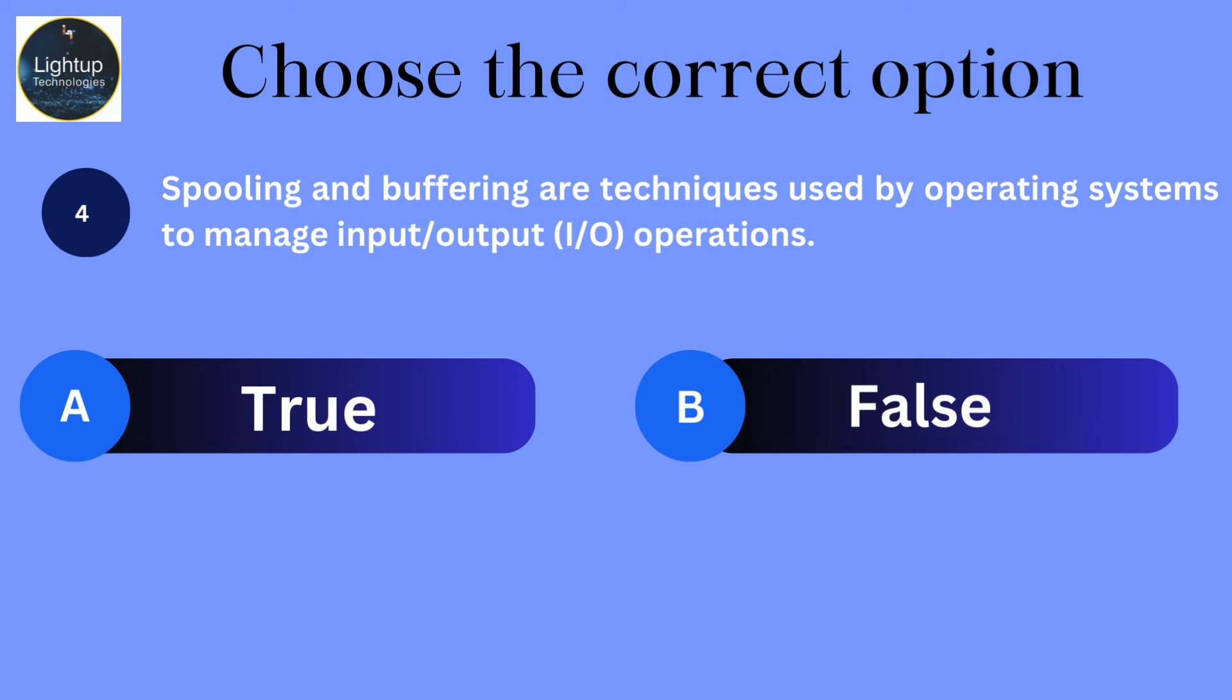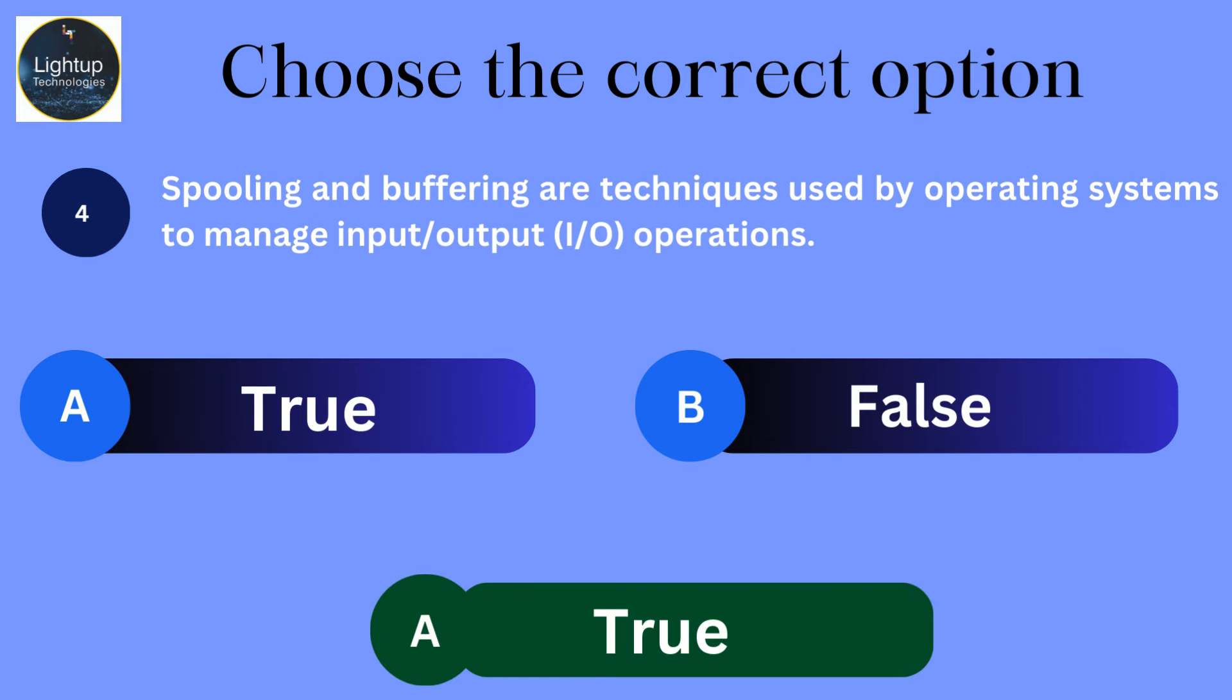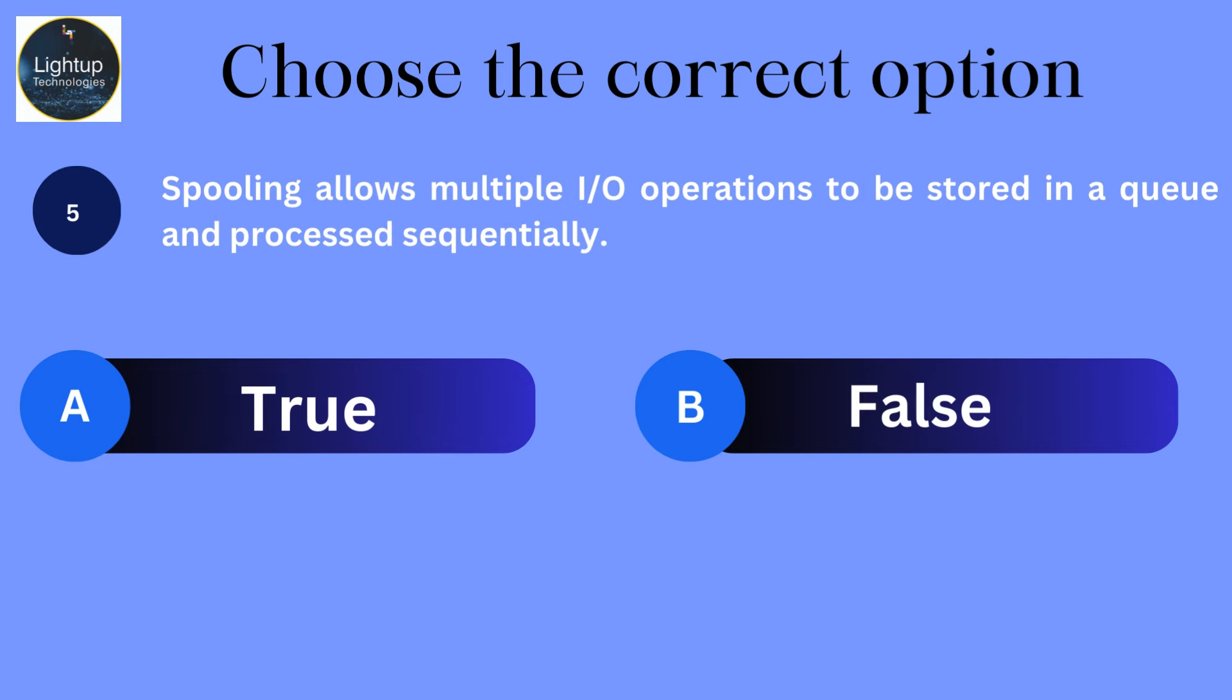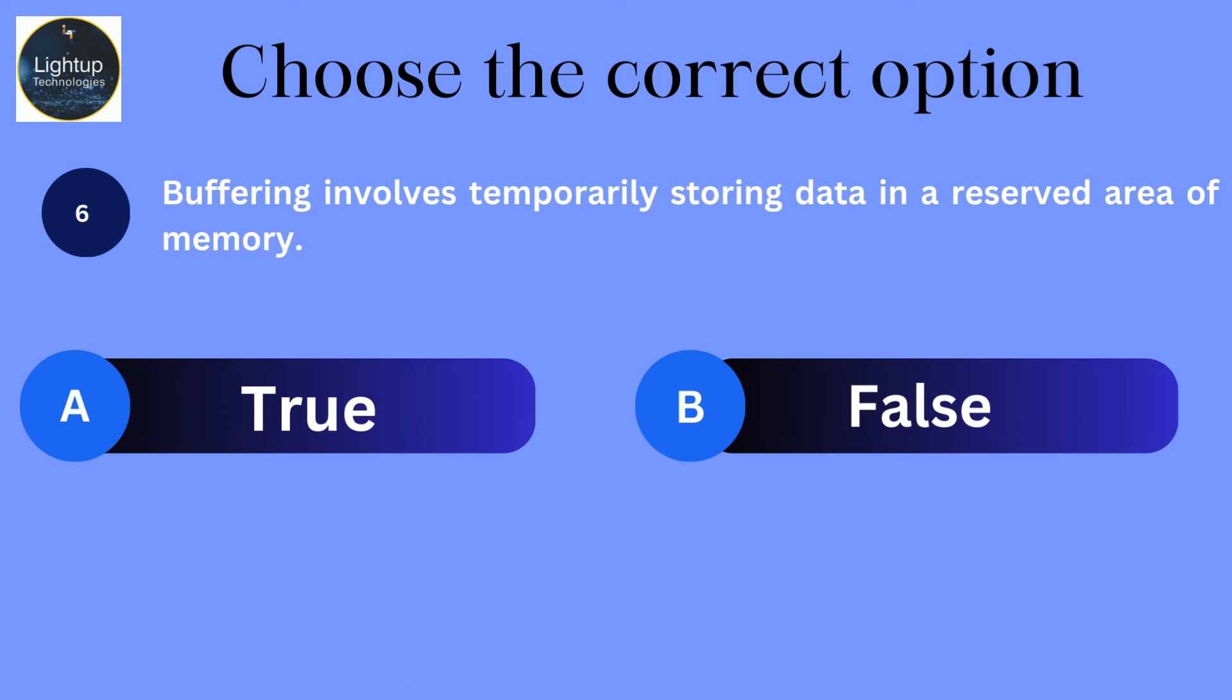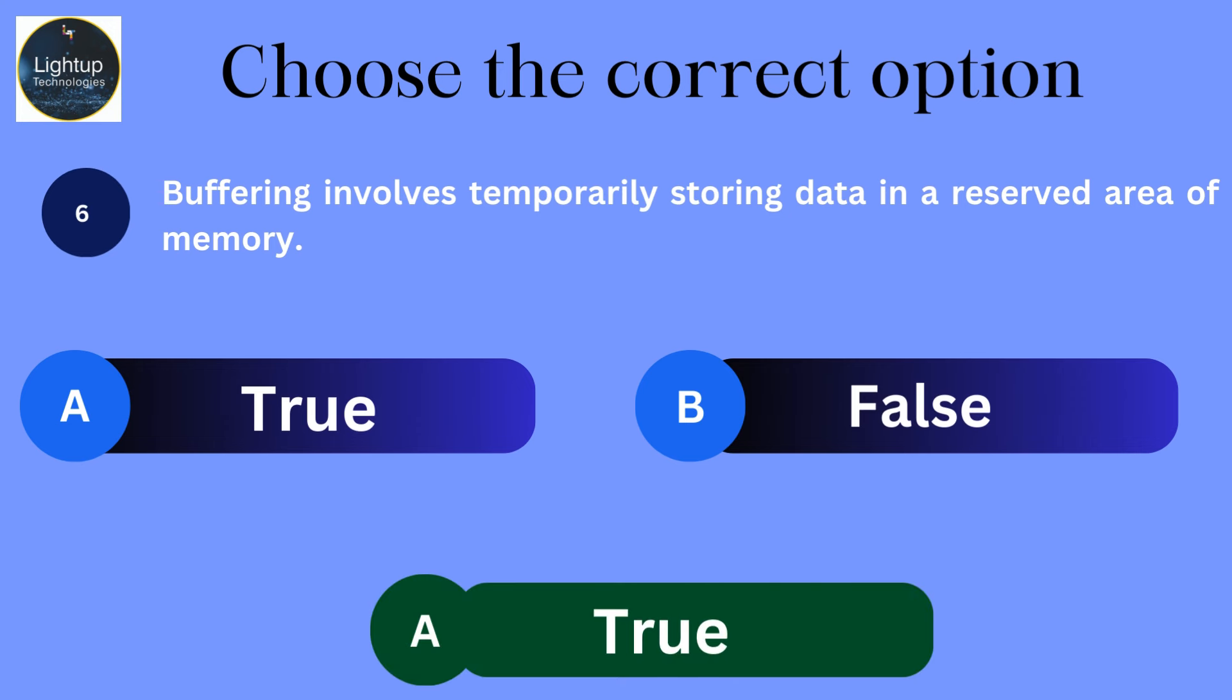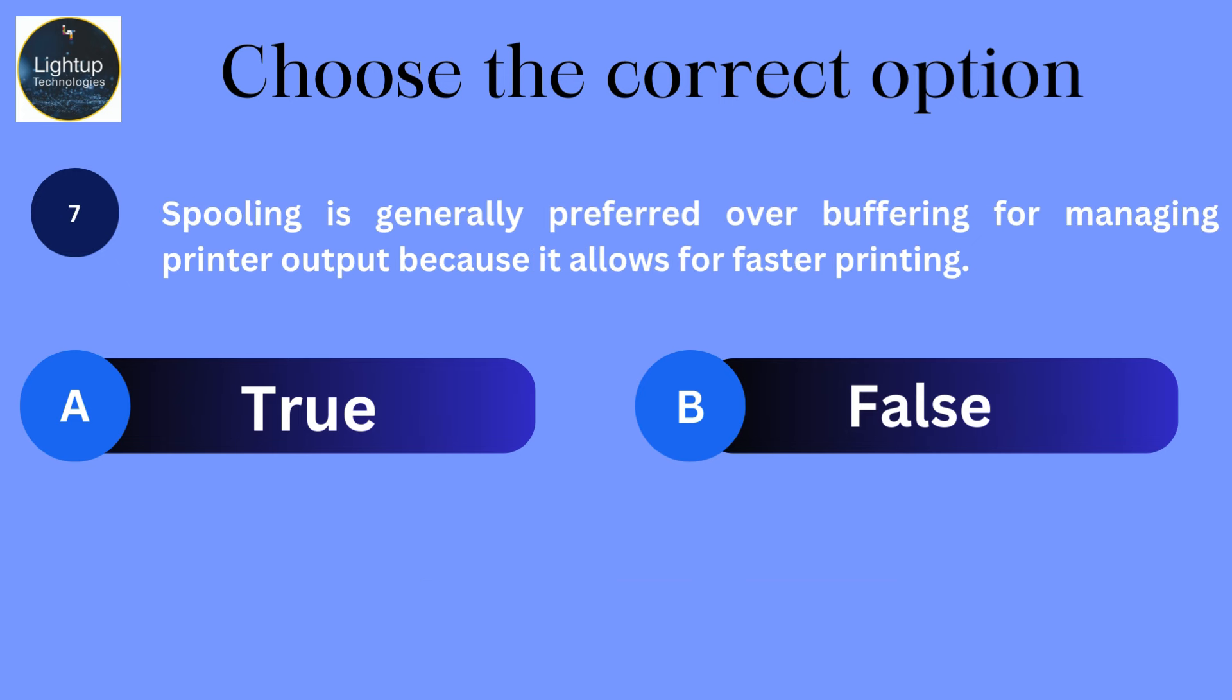Spooling and buffering are techniques used by operating systems to manage input-output operations. Spooling allows multiple input-output operations to be stored in a queue and processed sequentially. Buffering involves temporarily storing data in a reserved area of memory. Spooling is generally preferred over buffering for managing printer output because it allows for faster printing.